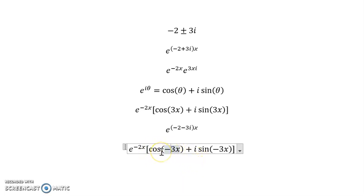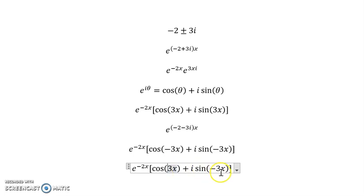But cosine is an even function, and so the negative doesn't do anything. So we can simplify that away and simply get rid of it, because cosine negative 3x and cosine 3x are the same. But for the sine function, that's an odd function, and so we can pull the negative sign out through the sine and put it in front here.